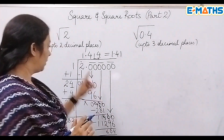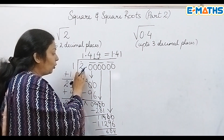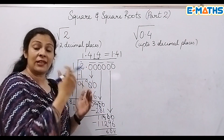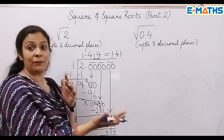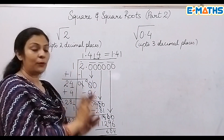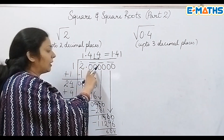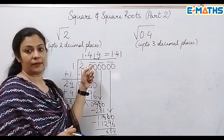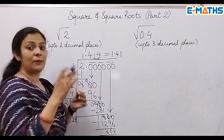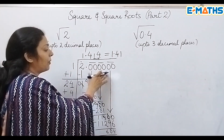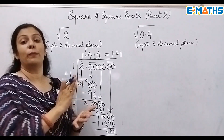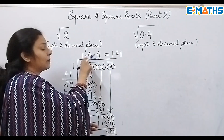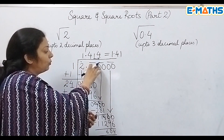I'd like to clarify: I wrote 2.000000 because taking zeros after the decimal point does not change the value — 2 is still 2. We only need those zeros to generate decimal places in our working. Also, you can count the decimal place pairs formed: here we had three pairs of decimal zeros, so we get three decimal places in the answer.